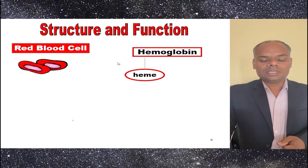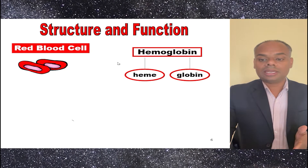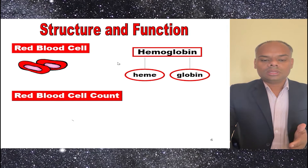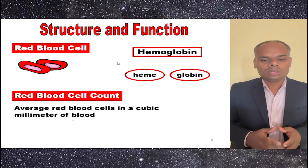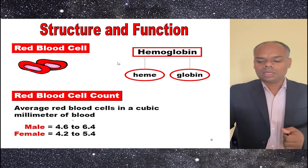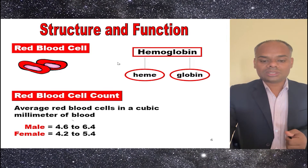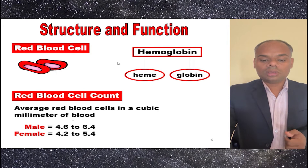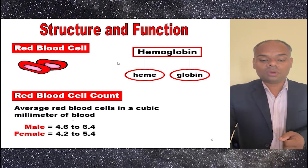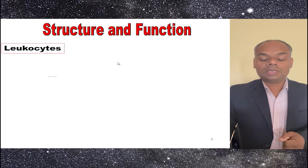Hemoglobin is made up of two words: heme and globin. The total RBC count in an average male is 4.6 to 6.4 per cubic millimeter, whereas for females it is 4.2 to 5.4 per cubic millimeter.